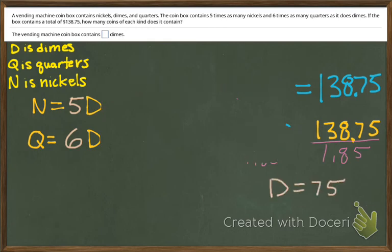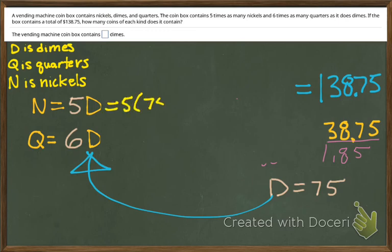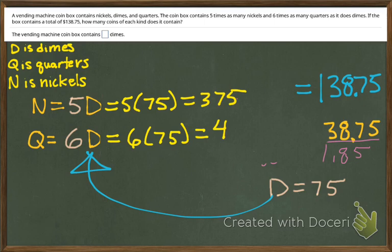Now what do I do? I got to go and I got to put those back into our relationships. So on our nickels, that's 5 times 75. We have 375 nickels. My quarters, that's 6 times 75. So wow, that's a lot of quarters. Can you imagine how heavy that is? But we're done.